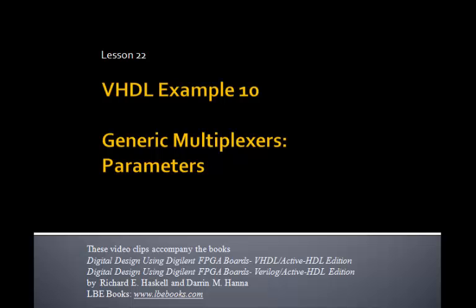This is lesson 22, which is VHDL example 10. And you remember in the last example, we designed a quad 2 to 1 mux in which each line coming in and going out contained four lines. And from that example, you could figure out how to make it 8 or 16.